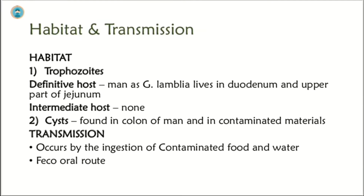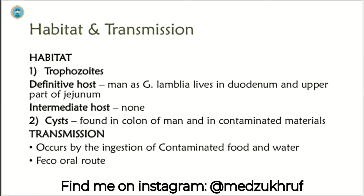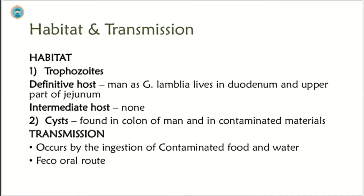Habitat and Transmission: Trophozoites have a definitive host — the human being — as Giardia lamblia lives in the duodenum and upper part of jejunum, and trophozoites have no intermediate host. Cysts are found in the colon of humans and in contaminated materials such as contaminated food or water. Transmission occurs by the ingestion of contaminated food and water, and the route is the feco-oral route.